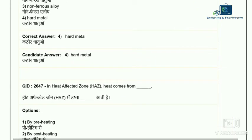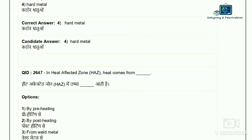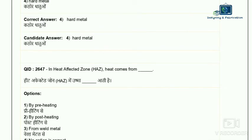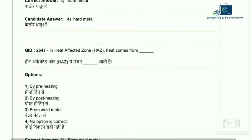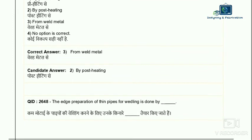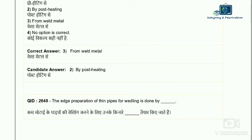Question 47: the heat affected zone (HAZ) — where does the heat come from? The options include pre-heating, post-heating, and from the weld metal. The correct answer is from the weld metal — option three. The HAZ is the zone adjacent to the weld metal on both sides affected by welding heat.